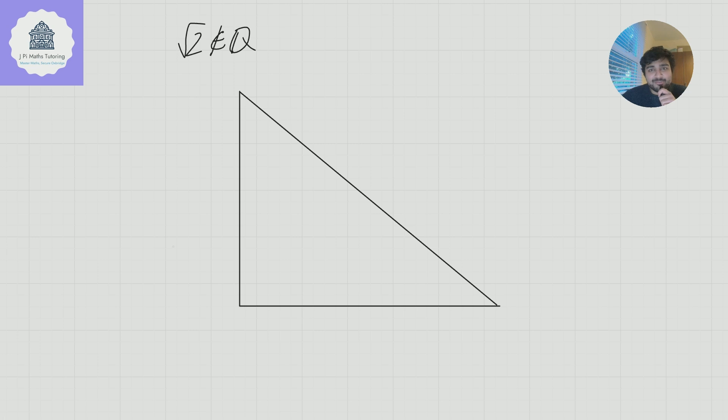Today, I'm going to be using geometry to prove that the square root of 2 is irrational. I've tried my best here to draw an isosceles right-angled triangle, and that's going to be the key to us proving that the square root of 2 is irrational.